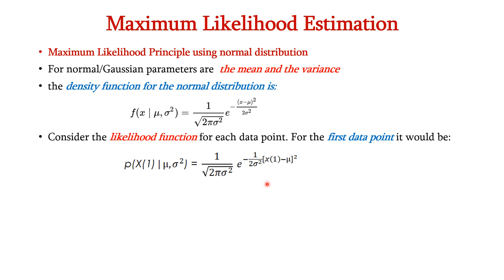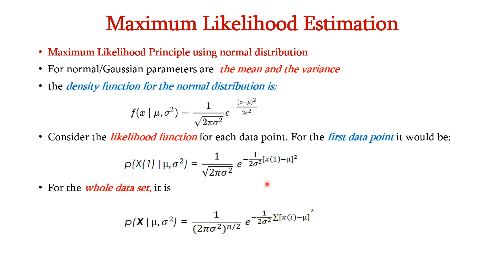If we consider n data points, the equation is modified so that the square root term becomes (2*pi*sigma^2)^(n/2), and instead of a single data point we have x_i with a summation over all n data points. So this is the likelihood equation for the full data set.